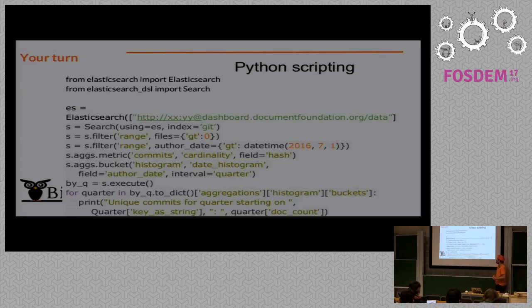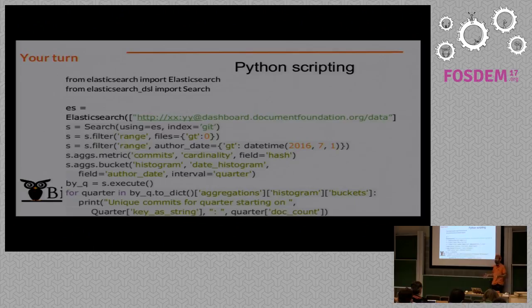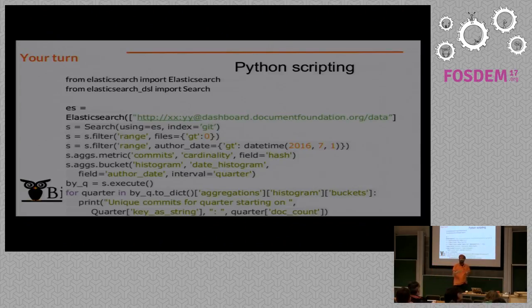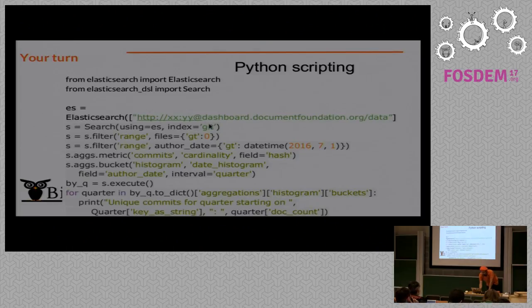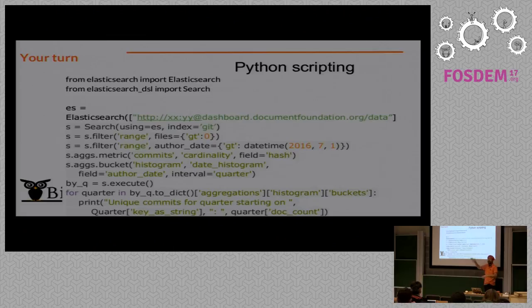The third example shows how to do the same thing with Python. You can rely on the Elasticsearch and Elasticsearch-DSL packages, which allow you to query Elasticsearch in a simple way. This actual code retrieves the number of commits per quarter from git, excluding merge commits and commits not touching code, from a given date, and unifying by hash so the same commit in multiple repositories is counted once. You get an Elasticsearch instance, build a search object on the git index, add filters, metrics, and buckets — very similar to SQLAlchemy — and then loop through the Elasticsearch response.